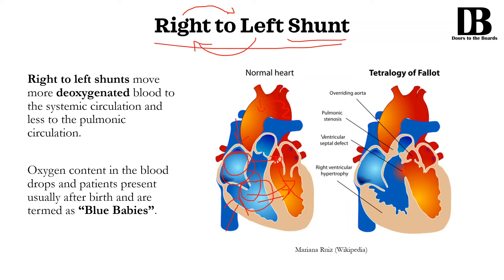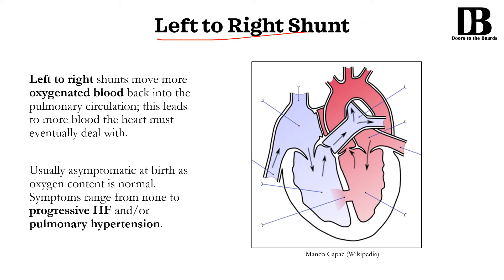Babies with this sort of right to left shunt would be termed as blue babies because their oxygen content in the blood drops. When we talk about left to right shunts, it's the exact opposite. Instead of shunting blood from the right side of the heart to the left side, you're shunting blood from the left atrium or left ventricle right into the right side of the heart. Although this doesn't cause any problems with oxygenation because you're just moving that already oxygenated blood back to get oxygenated even more, the issues arise in the fact that you are just overloading the heart and lungs with more blood.